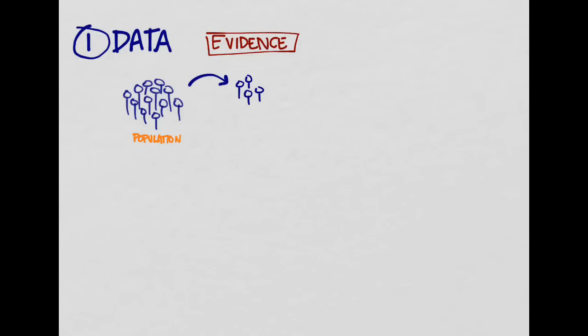What that really means is you have to have some data. You have a population from which you take a sample, and from the sample you do some sort of data collection, whether that's measurements like blood pressure or the average blood pressure, or some sort of count like how many people died. But you've got to collect some data.